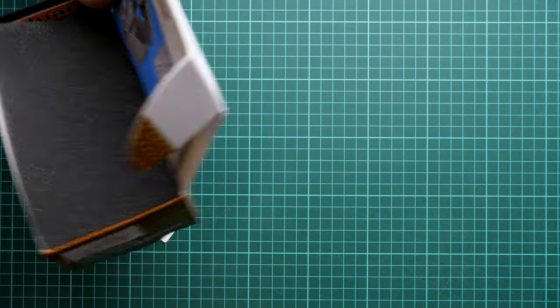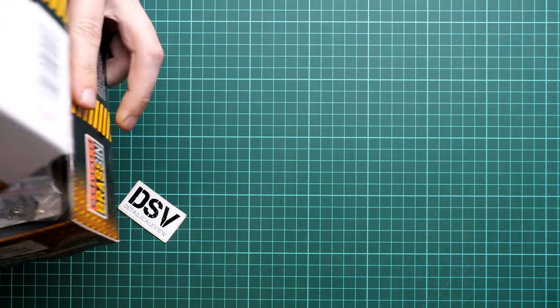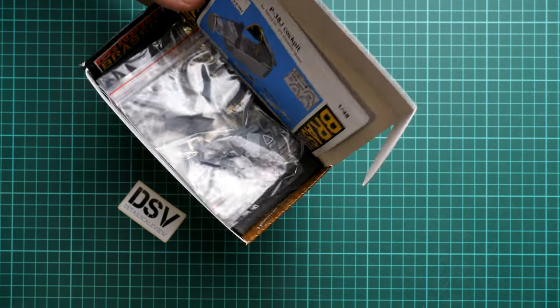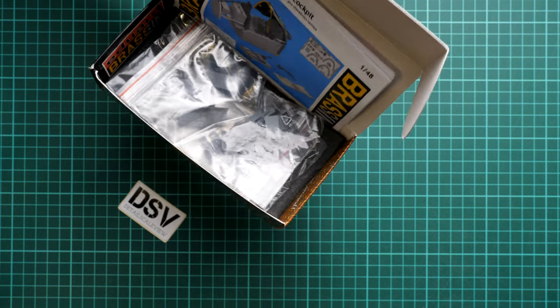Here you can see the packaging is quite standard. We have the parts secured in between two foam layers. We have three plastic bags with parts and one plastic bag with the PE parts and film. I suggest we start with the parts and then gradually move on to other components.